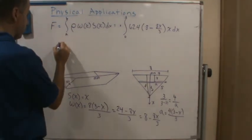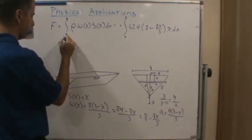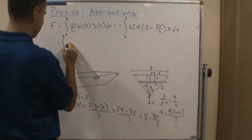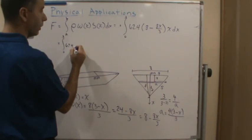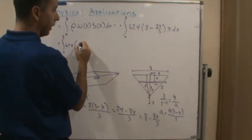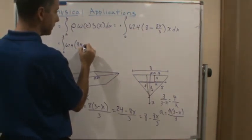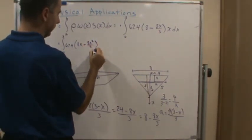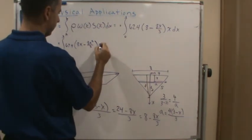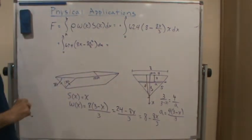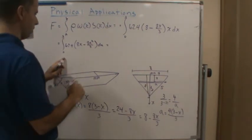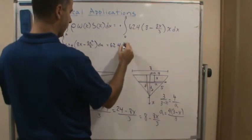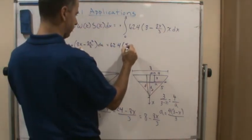So let's go for it, 62.4. So this is going to be from 0 to 8, not 8, 0 to 3. And this is going to be 62.4 times, now it's going to be 8x minus 8x squared over 3 dx. And now we're going to integrate. So let's pull the 62 out, so 62.4. And what's this going to be?